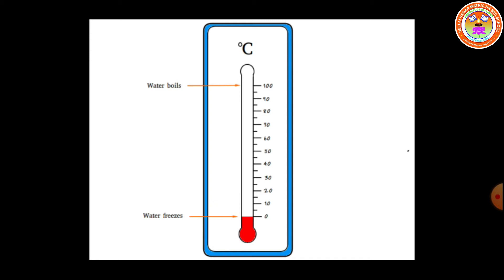The readings are calibrated from freezing point to boiling point. The freezing point of water is 0 degree Celsius and the boiling point of water is 100 degree Celsius. In Greek, 'centum' means 100 and 'gradus' means steps, so both words make it centigrade, and later it is called Celsius.